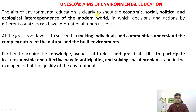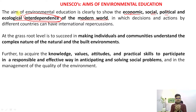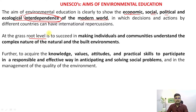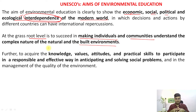UNESCO's aim of environmental education is to show the economic, social, political, and ecological interdependence of the modern world. These four pillars are interdependent, and without environmental education people will not understand this delicate linkage. At the grassroot level, the aim is to help individuals and communities understand the complex nature of the built environment — for example, the role of urbanization, waste disposal problems, and pollution.